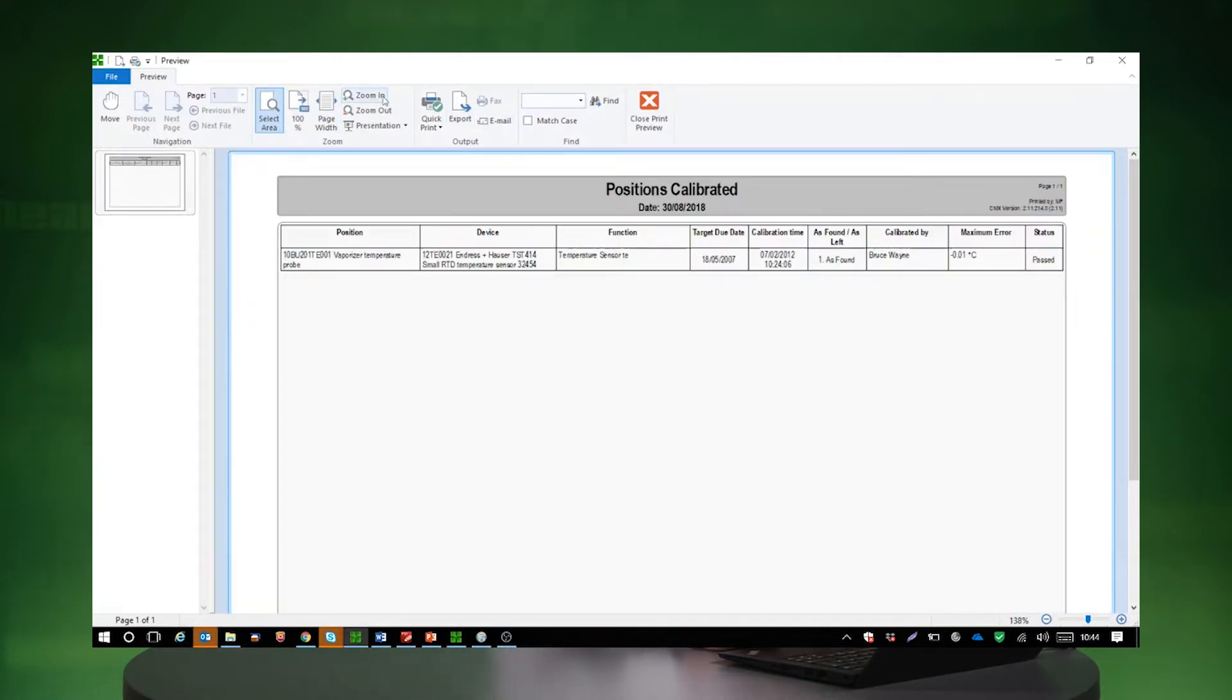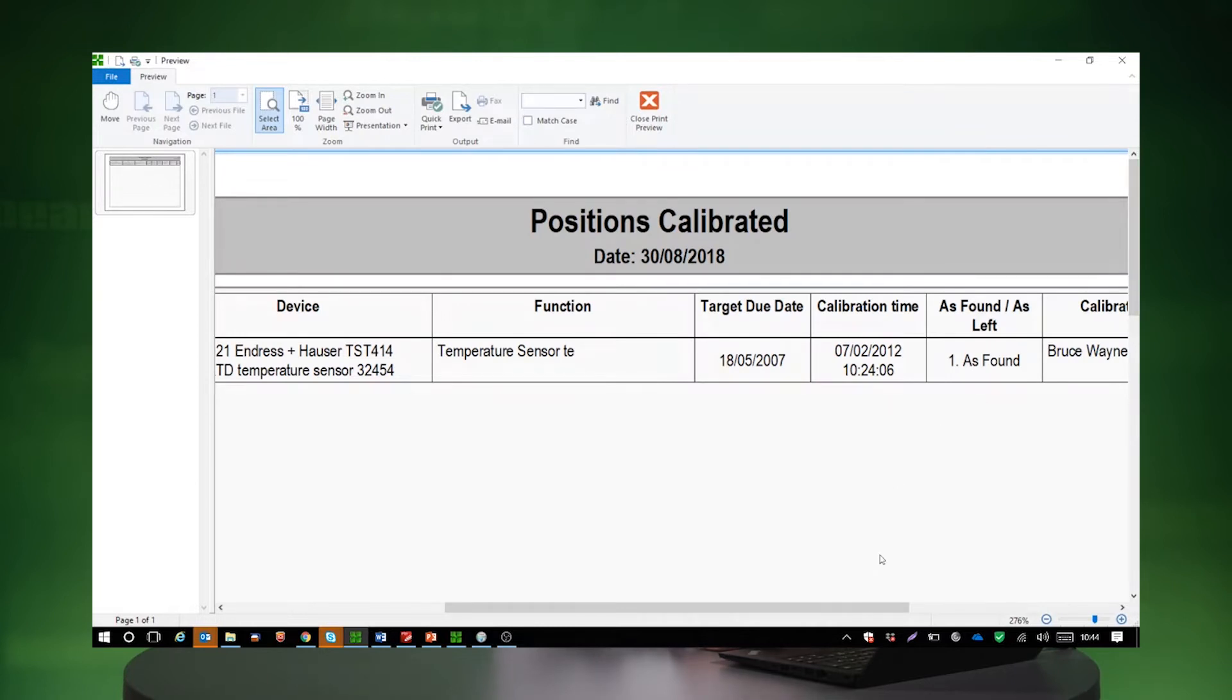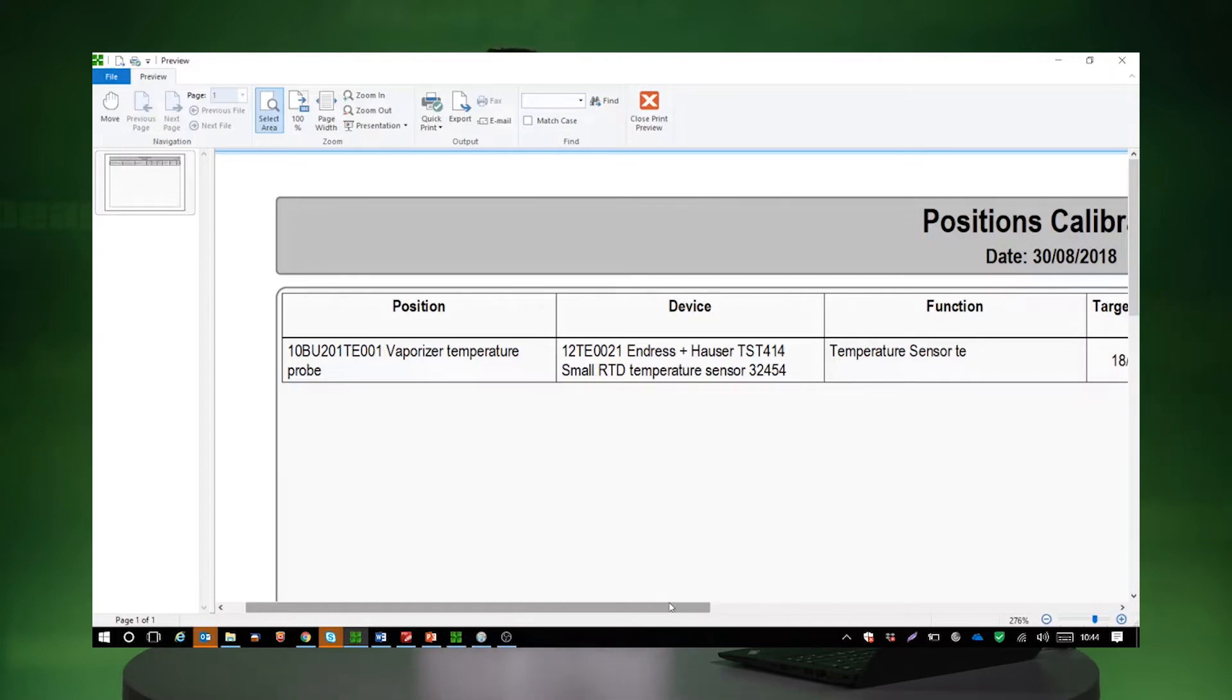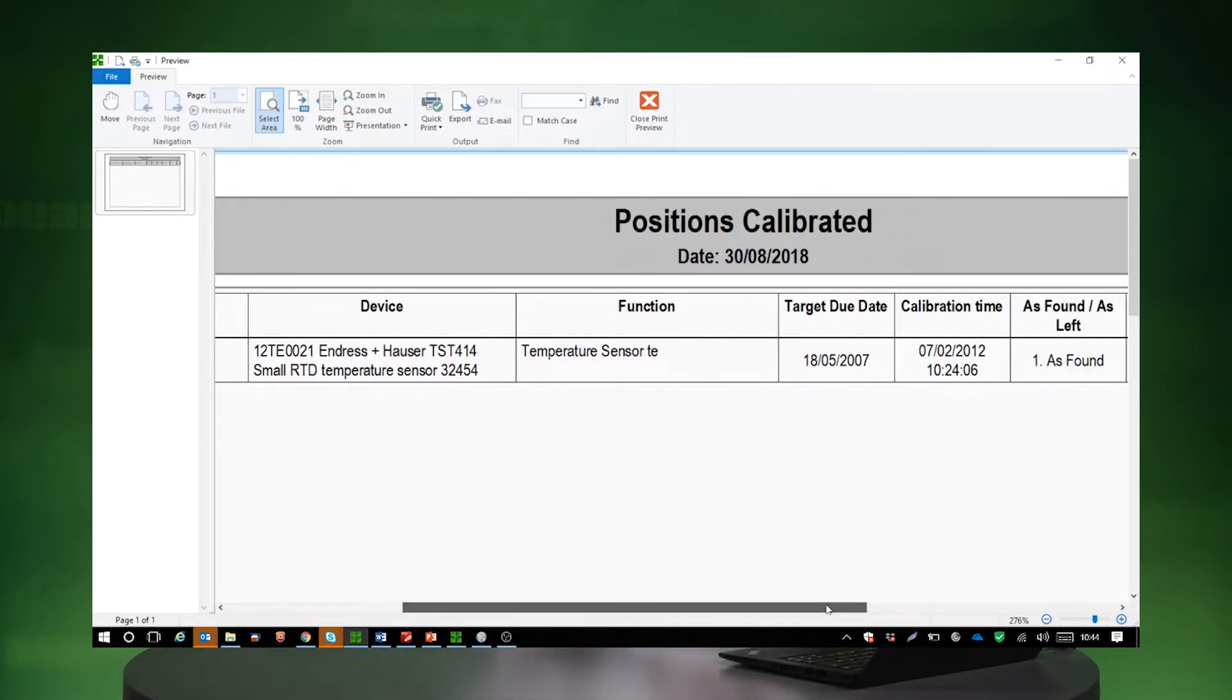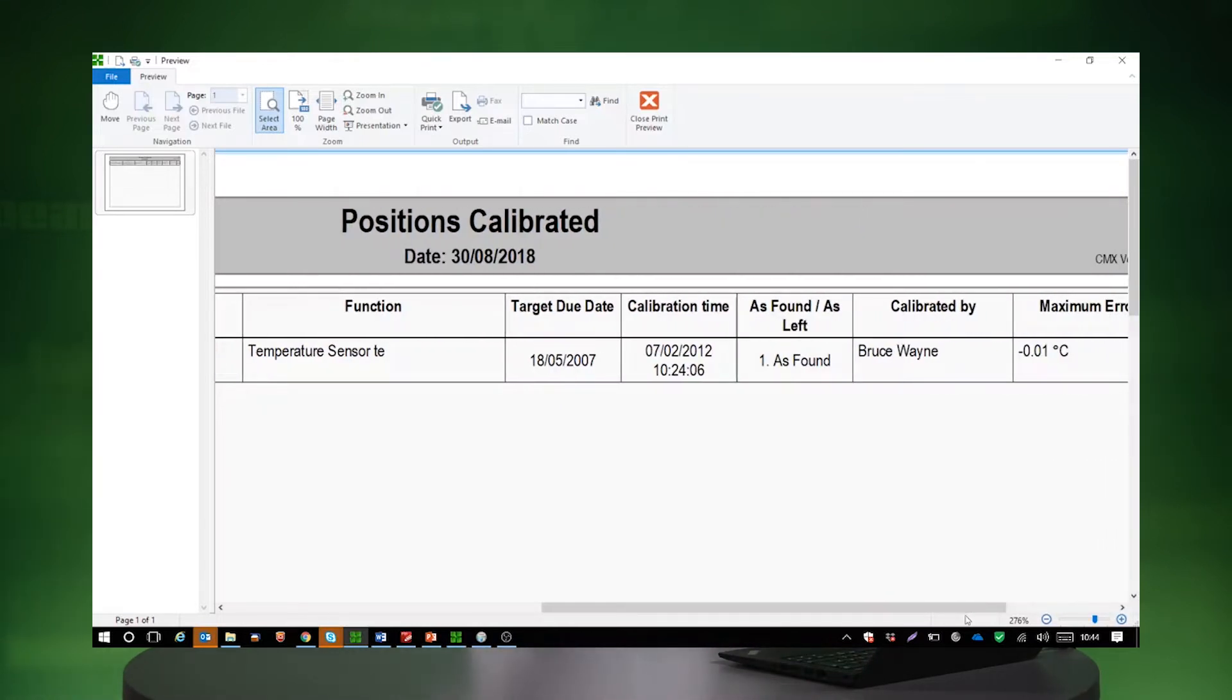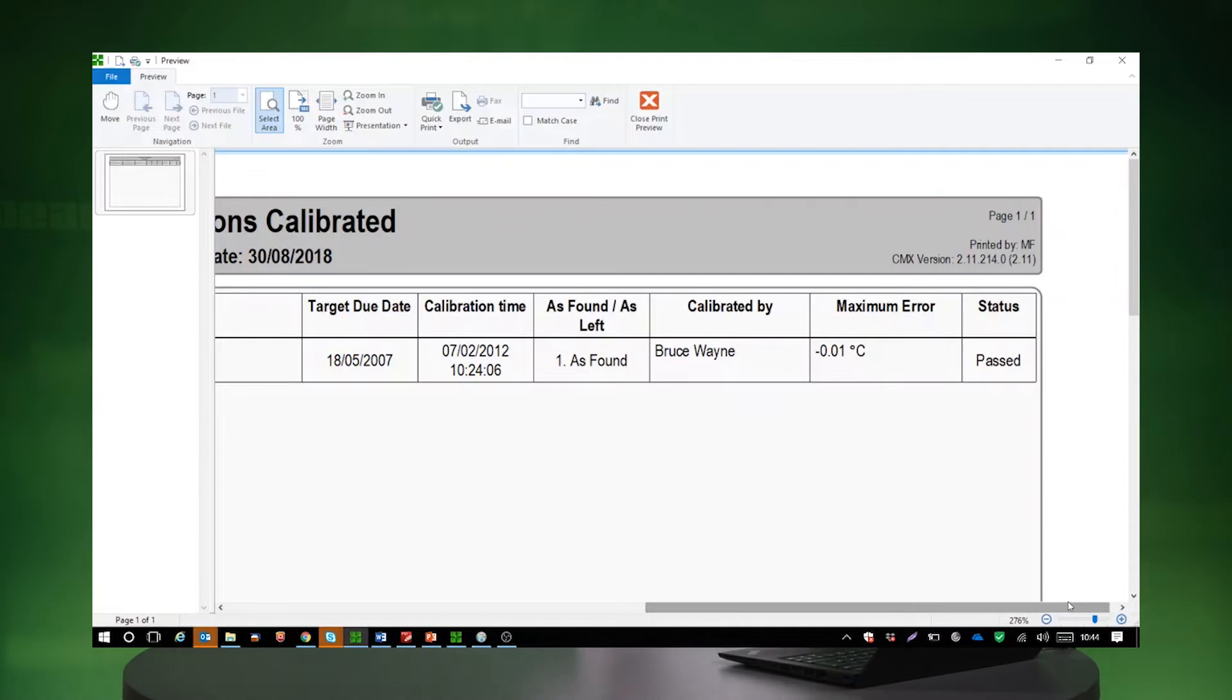If I just go for page width, you can see I can zoom it in as well. We've got some information about positions, devices, so position tag, and then device associated with it, with the serial numbers and manufacturer details. You've got information about what that particular transmitter or temperature sensor is doing. You also have target due date, when it was calibrated and how we left that as found as left, who calibrated it, and the most important column is whether it passed or it failed.